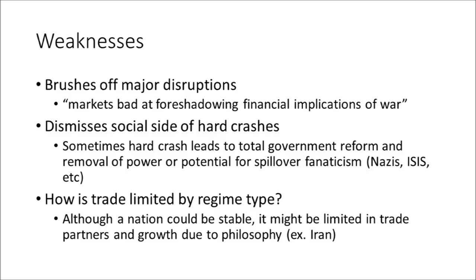Sharma also doesn't describe how trade is limited by regime type. Although a nation could be stable, it might be limited in trade partners and growth due to its philosophy. For example, Iran: by taking a strong anti-American approach in 1979, Iran limited its ability to trade with the U.S. So could Iran have grown more if they had toned down their rhetoric?